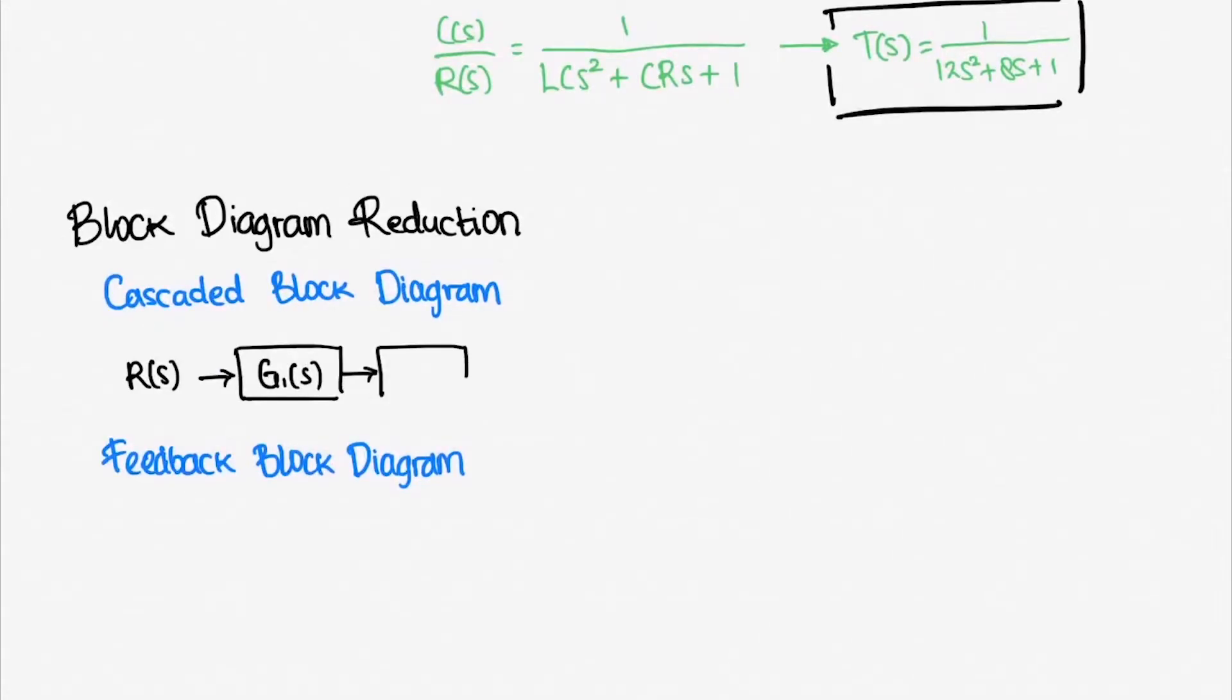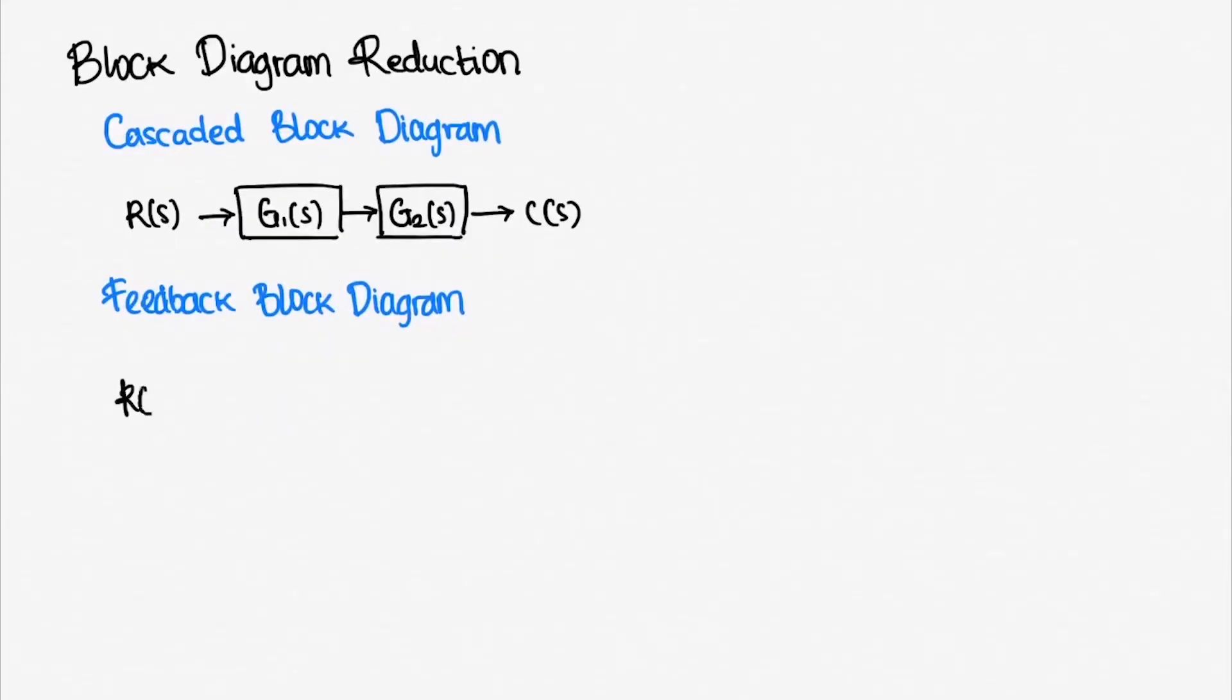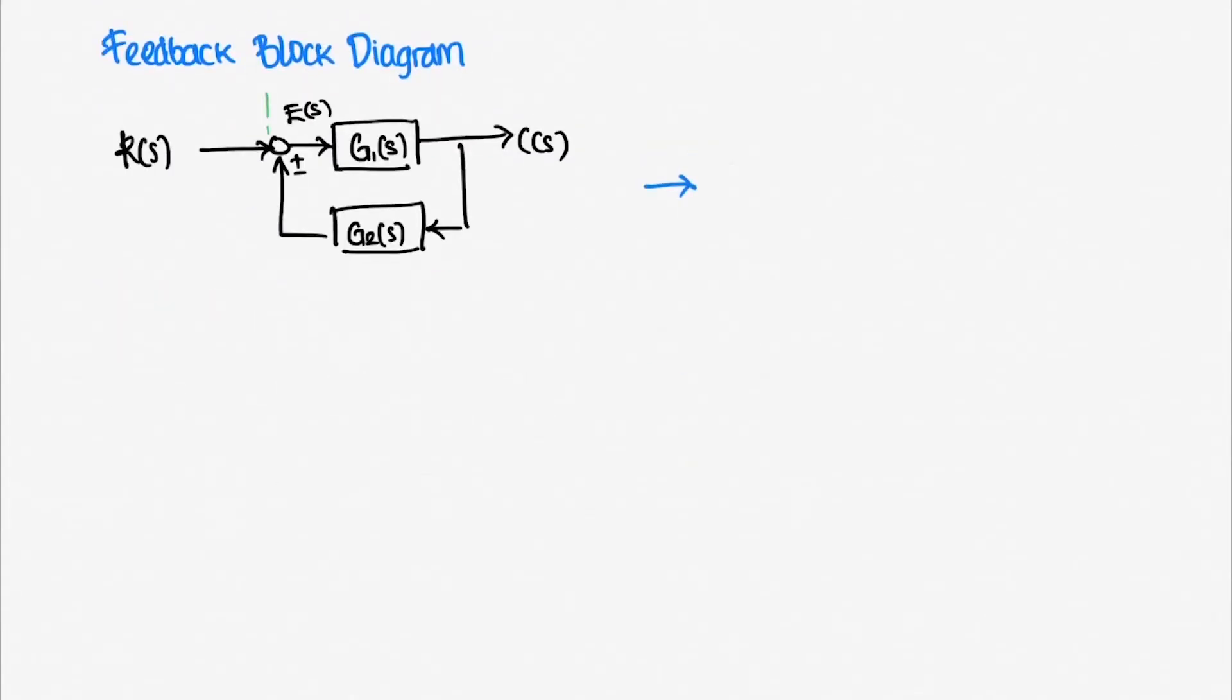From this part, we get that C(s) is equal to E(s) times G(s). Well, from this part, we get that E(s) equals R(s) plus/minus C(s) times G2(s). This part here is called the summing junction. You might want to pause and ponder for a second. Look back into our equation and the block diagram carefully.